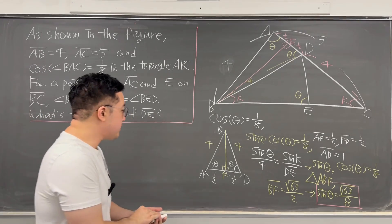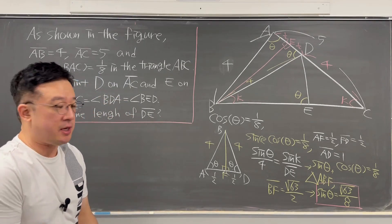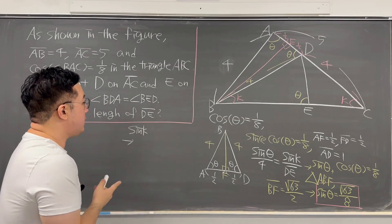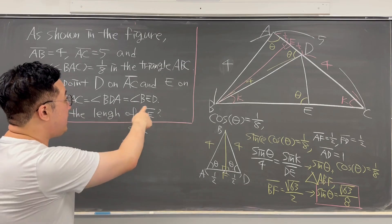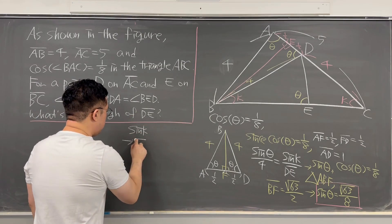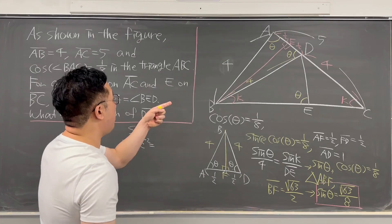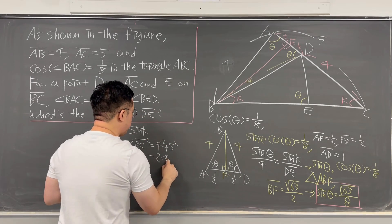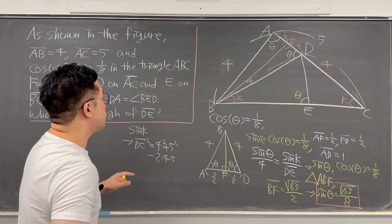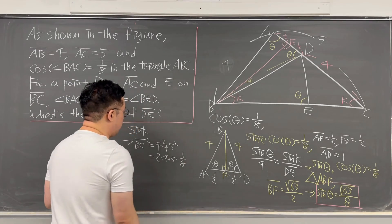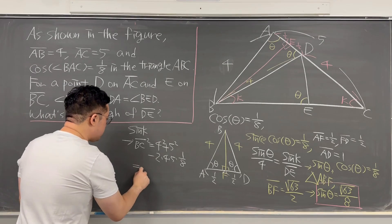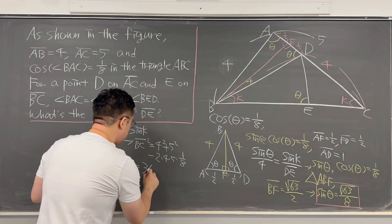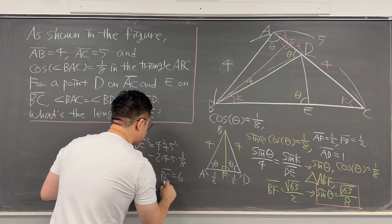Now for sine K, we can use the Law of Cosines. BC squared equals 4 squared plus 5 squared minus 2 times 4 times 5 times cosine of theta, which was 1/8. So BC squared equals 41 minus 5 equals 36, which means BC equals 6.